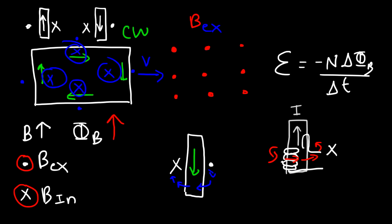So if you attempt to increase the magnetic flux in the coil, the system is going to try to maintain a state of equilibrium. If you increase the flux, it's going to try to decrease it. If you decrease the flux in the coil, it's going to try to increase it.